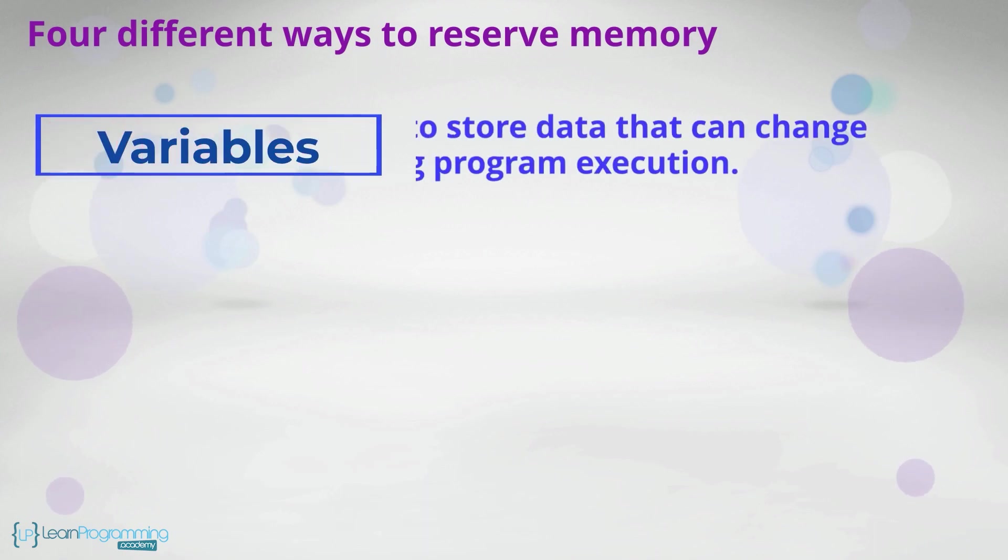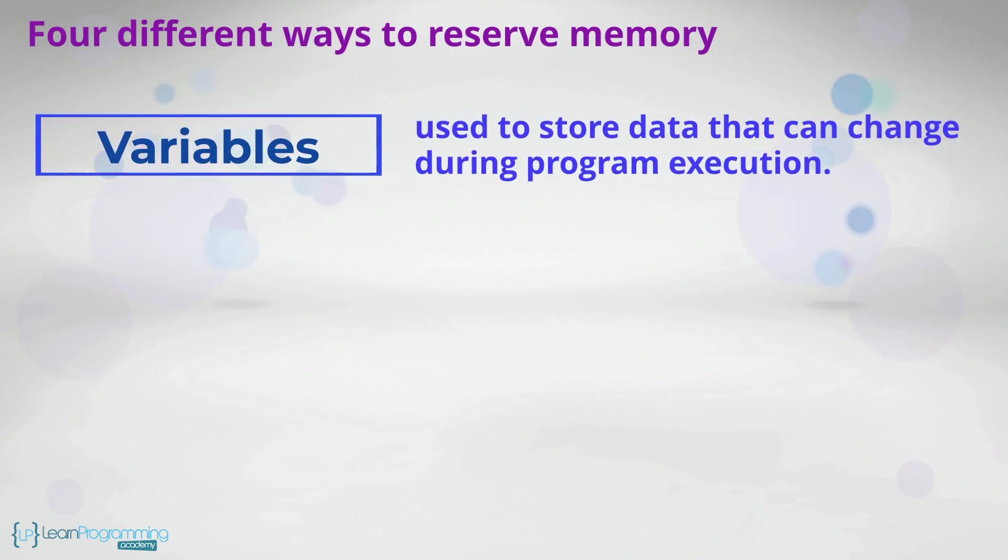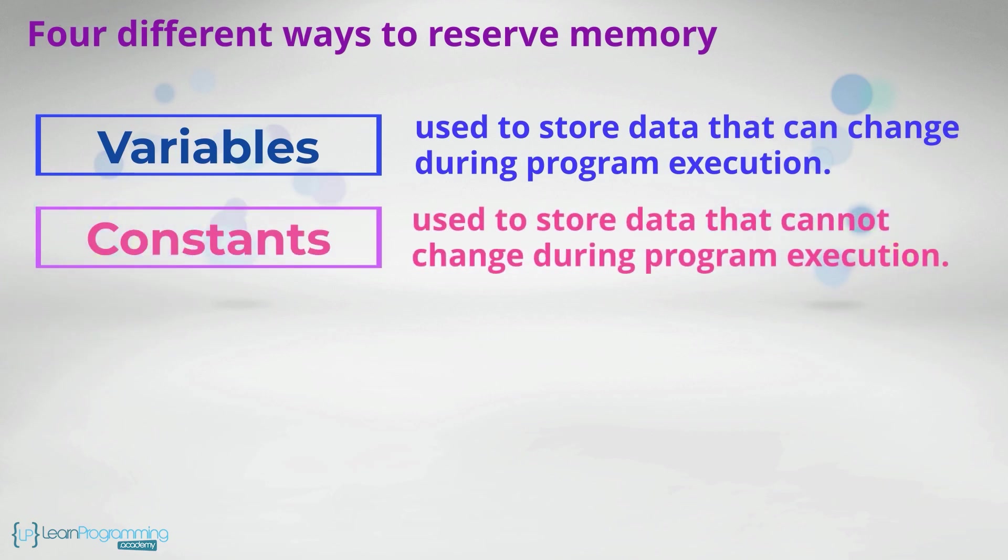Variables are generally used to store data that can change during program execution. Constants are generally used to store data that cannot change during program execution.